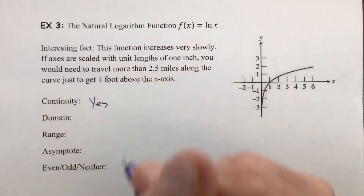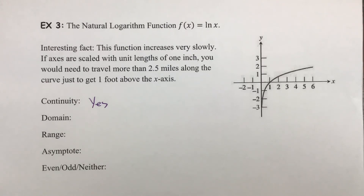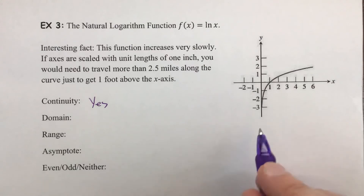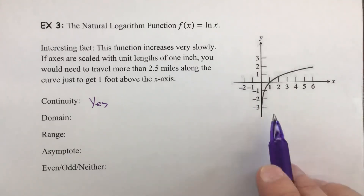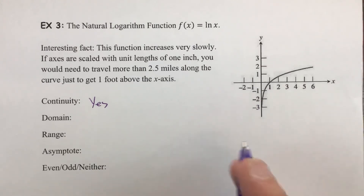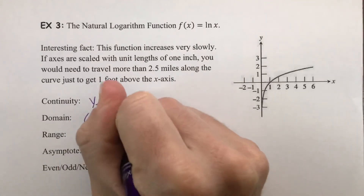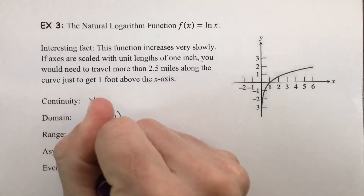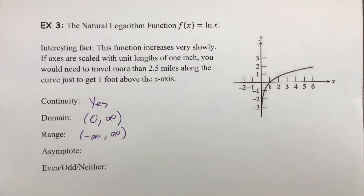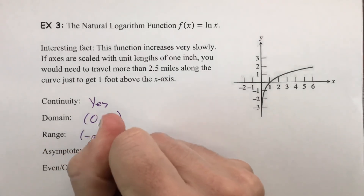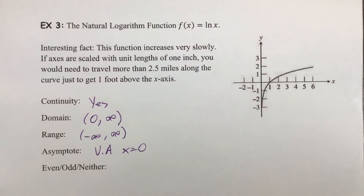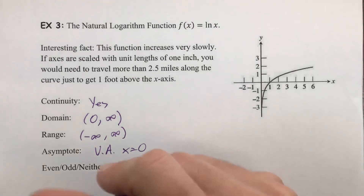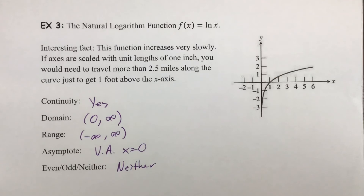Does the natural log have continuity? Yes — no breaks in the graph. The domain is restricted to the right side only, bounded at the y-axis: the open interval from zero to infinity. The range is all real numbers. Note that the domain and range are the opposites of the exponential function — as expected for inverse functions. There is a vertical asymptote at x = 0. Is it even, odd, or neither? Neither — using the same argument as the exponential function.